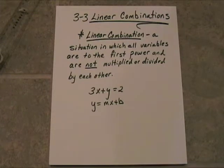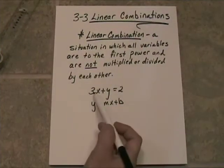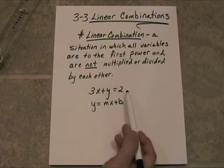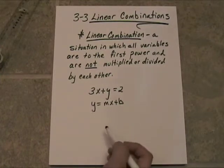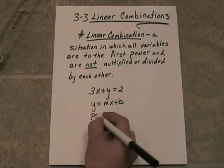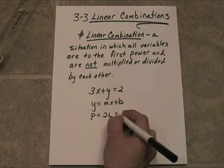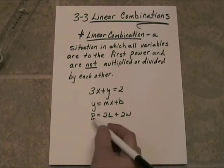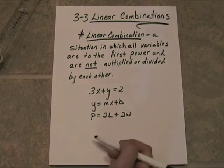A linear combination is a situation in which all variables are to the first power and are not multiplied or divided by each other. So they're very simple little combinations, some examples of which are 3x + y = 2, the classic slope-intercept form y = mx + b, and the perimeter of a rectangle: 2 times the length plus 2 times the width. All the variables are to the first power and they are not being multiplied together.